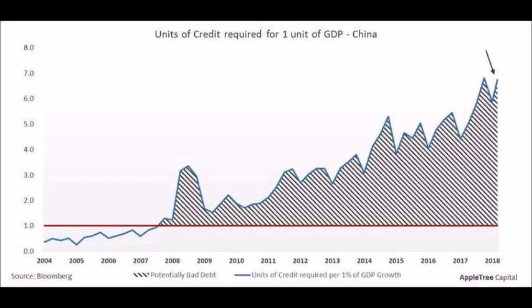As you can see here, it now takes 6.75 units of credit for one unit of GDP in China, whereas 10 years ago things were very, very different. If you look at 2007-2008 on the chart here, things are much different and the trend is much higher. So this proves that China has a lot of bad debt and that the credit bubble — the amount of credit China has put into their economy — gives very little bang for their buck now. It takes an enormous amount of credit for one unit of GDP now.